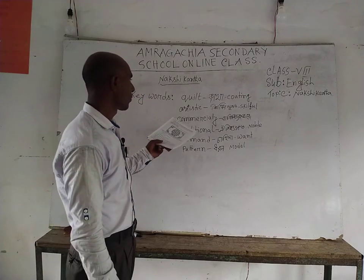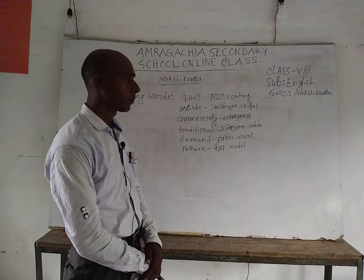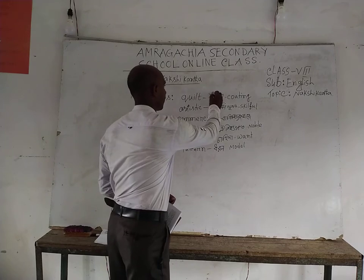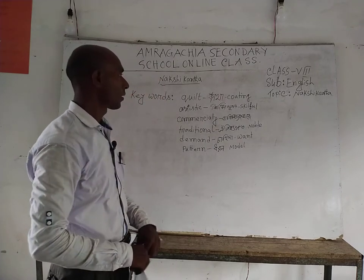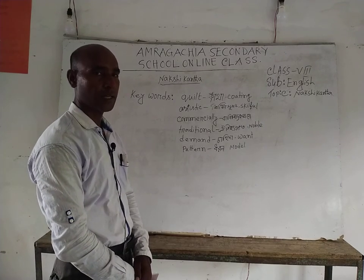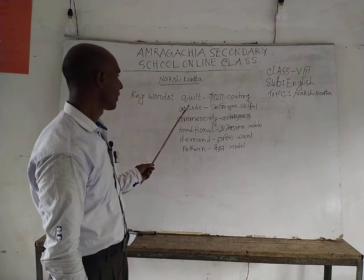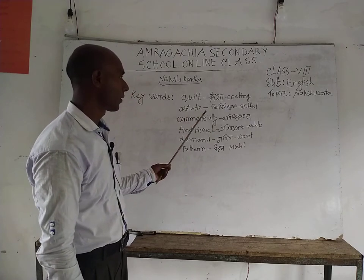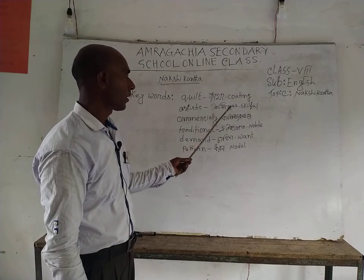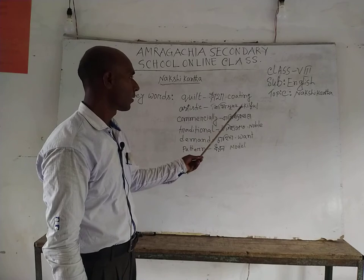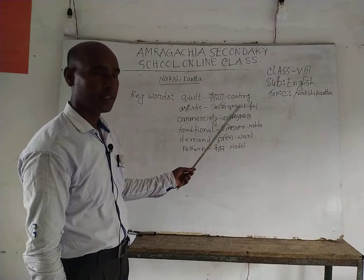Nakshikatha keywords: 'coiled' — its Bangla meaning is 'katha' (coating). Another word: 'artistic' — its Bangla meaning is 'shilpishulap' and its English meaning is 'skillful'. Artistic means skillful.